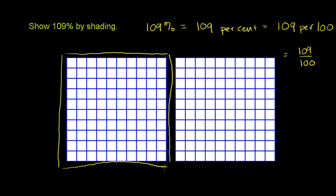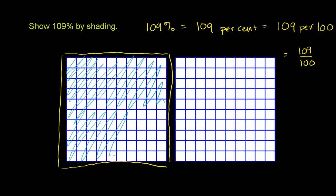So if we want 109 of those 100 pieces, what are we talking about? Well, that means we're going to shade in all of the 100 right over here. Let me do that in a new color. So we'll shade in all of this right here. If you just shaded that in, that would be 100%. That would be 100 over 100 or 100 per 100 or 100 per cent.